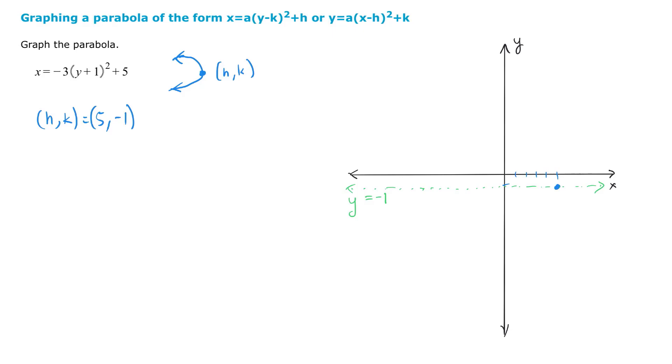So it would be nice to find, let's say, the x-intercept. The x-intercept occurs when y is 0. So x is equal to negative 3 times 0 plus 1 squared plus 5. But what is that? x is equal to 2. So we have an ordered pair. 2 comma 0 right there. So we have 2 comma 0.